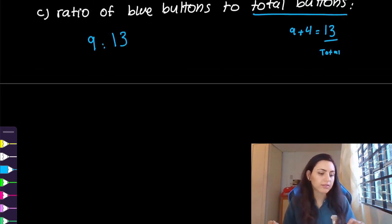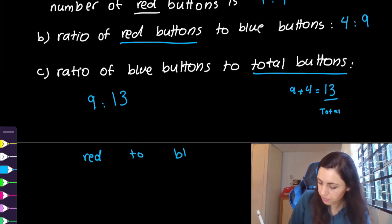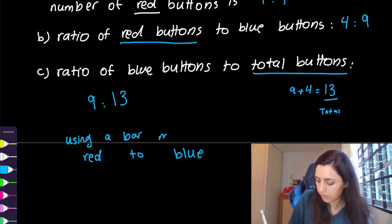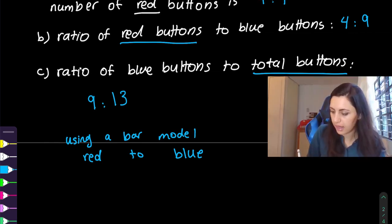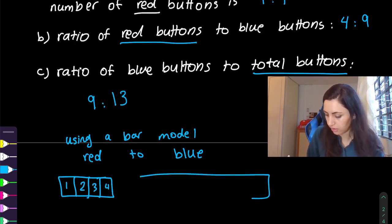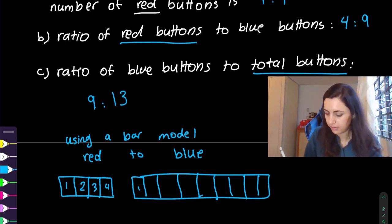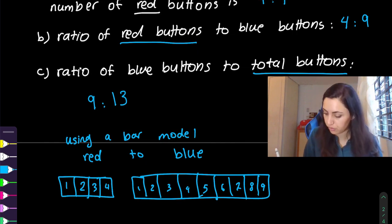If the question asks you to show the ratio in a bar model — for example, red to blue — then draw four bars for red and nine bars for blue. That's how you show it in a bar model.